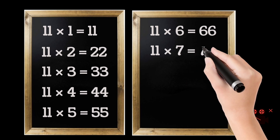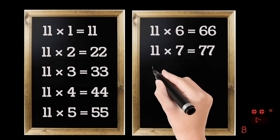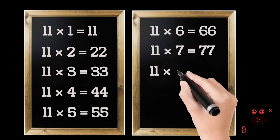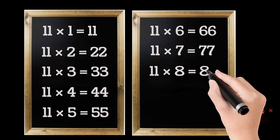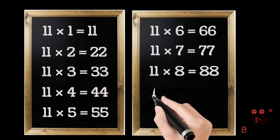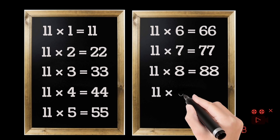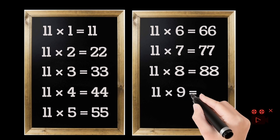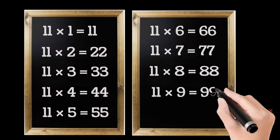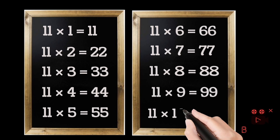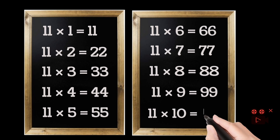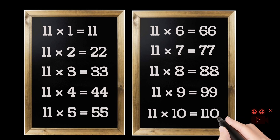11 sevens are 77. 11 eights are 88. 11 nines are 99. 11 tens are 110.